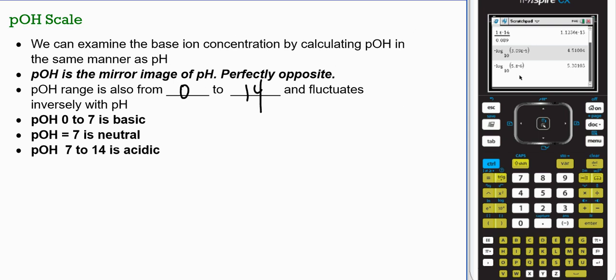And it fluctuates inversely with pH. When pOH is 0 to 7, you have a basic system. Exactly 7, neutral. pOH is 7 to 14, your system is acidic. So you see how it's very similar.